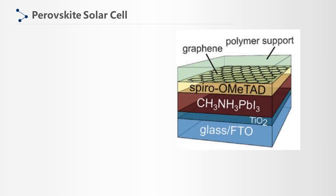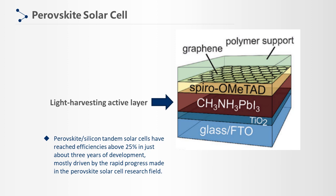A perovskite solar cell is a solar cell that includes a perovskite structure compound, in which a hybrid organic-inorganic lead or tin halide-based material is used as a light-harvesting active layer. Perovskite/silicon tandem solar cells have reached efficiencies above 25% in just about three years of development, mostly driven by the rapid progress made in perovskite solar cell research.